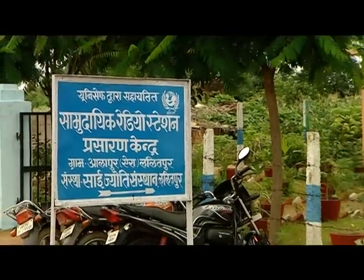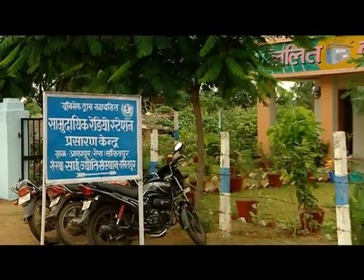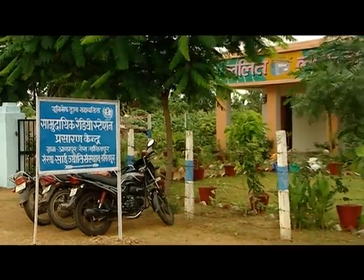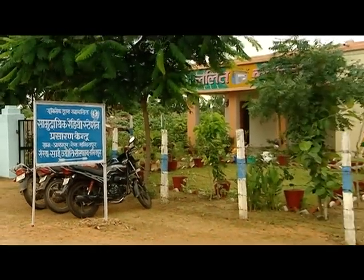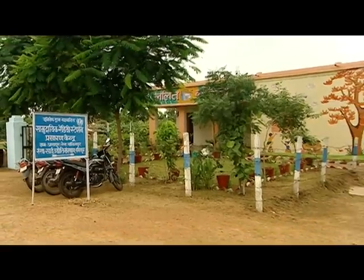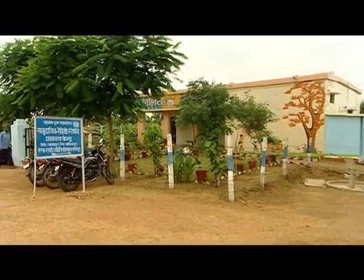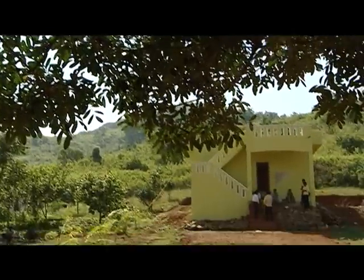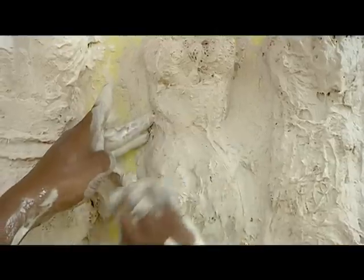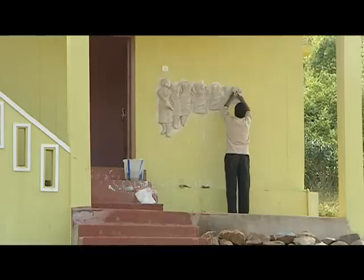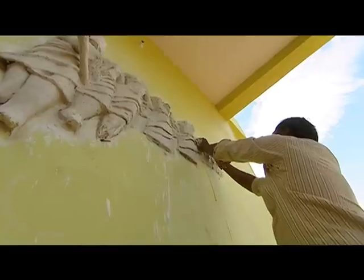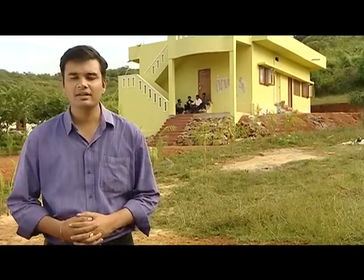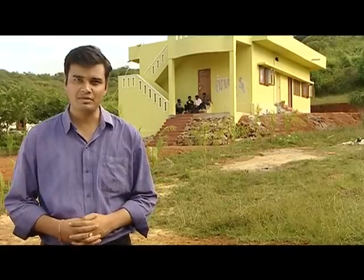Land or an existing building can be leased from the local panchayat, as in the case of Lalitpur, or from a local government body. In the case of Radio Dhimsa in Koraput, Orissa, the land belongs to Sova, the NGO that runs the station. With the location decided, the application form can be submitted.